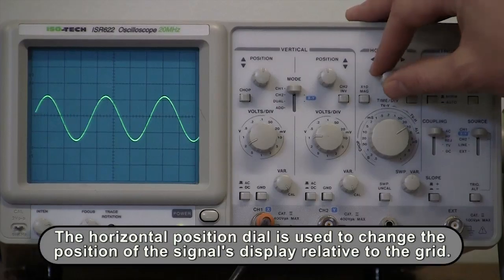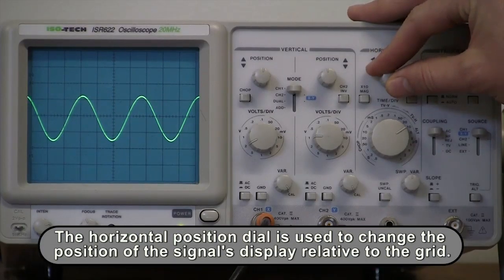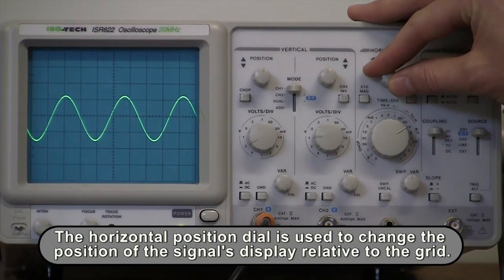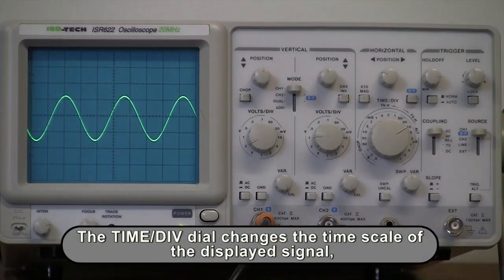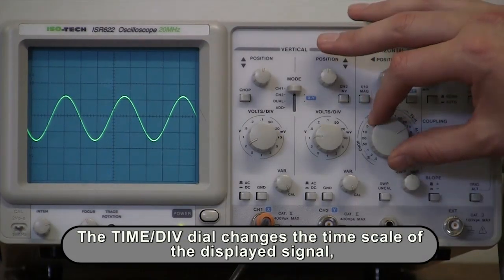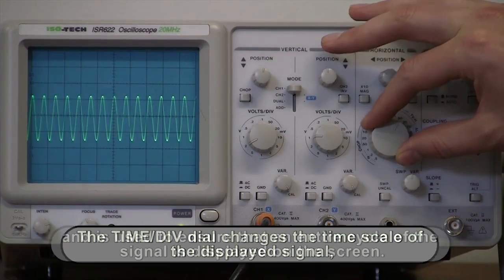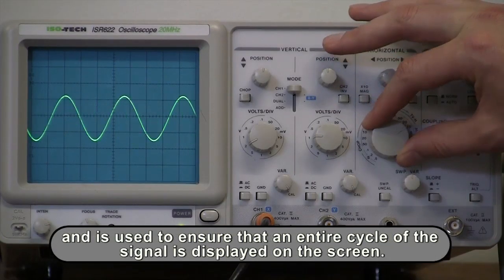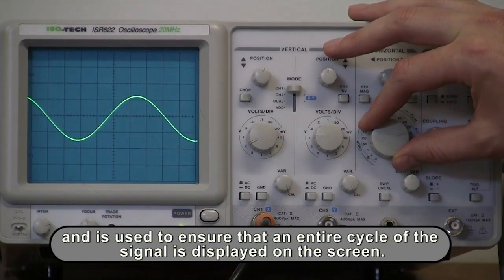The horizontal position dial is used to change the position of the signal's display relative to the grid. The time per division dial changes the time scale of the displayed signal, and is used to ensure that an entire cycle of the signal is displayed on the screen.